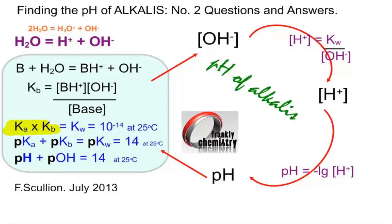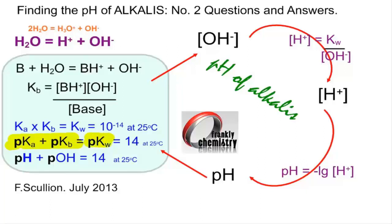In the first video we developed the relationship that the product of Ka and Kb is in fact Kw, the ionic product of water, which at 25°C (298K) is 10⁻¹⁴. We then took the negative log of both sides to get pKa + pKb = pKw, where P stands for the negative log to base 10. Also, pH + pOH equals pKw — where pOH is the negative log of the hydroxide ion concentration in the alkaline solution — which equals 14 at 25°C.